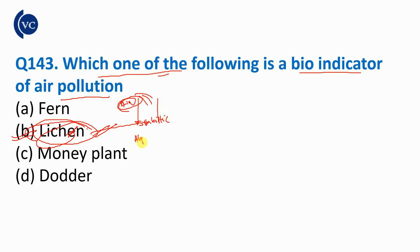Lichen, which is made of algae plus fungi, is the bio indicator of air pollution. Lichen, made of algae and fungi, is also the indicator of acid-base, and it is the bio indicator of air pollution.